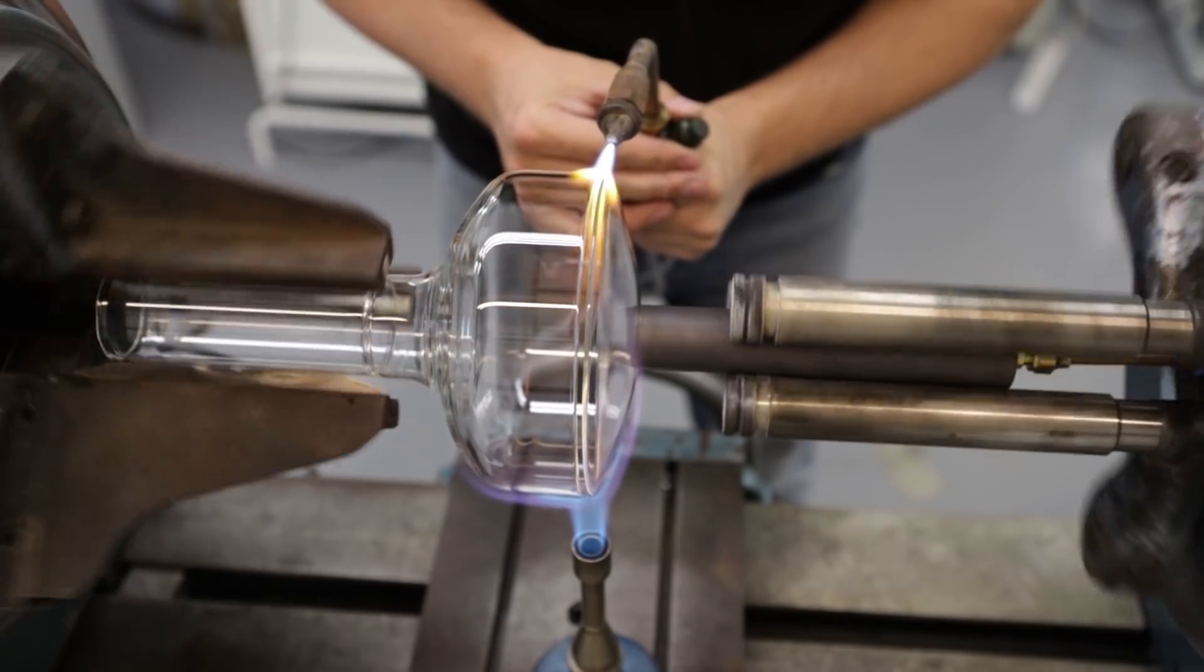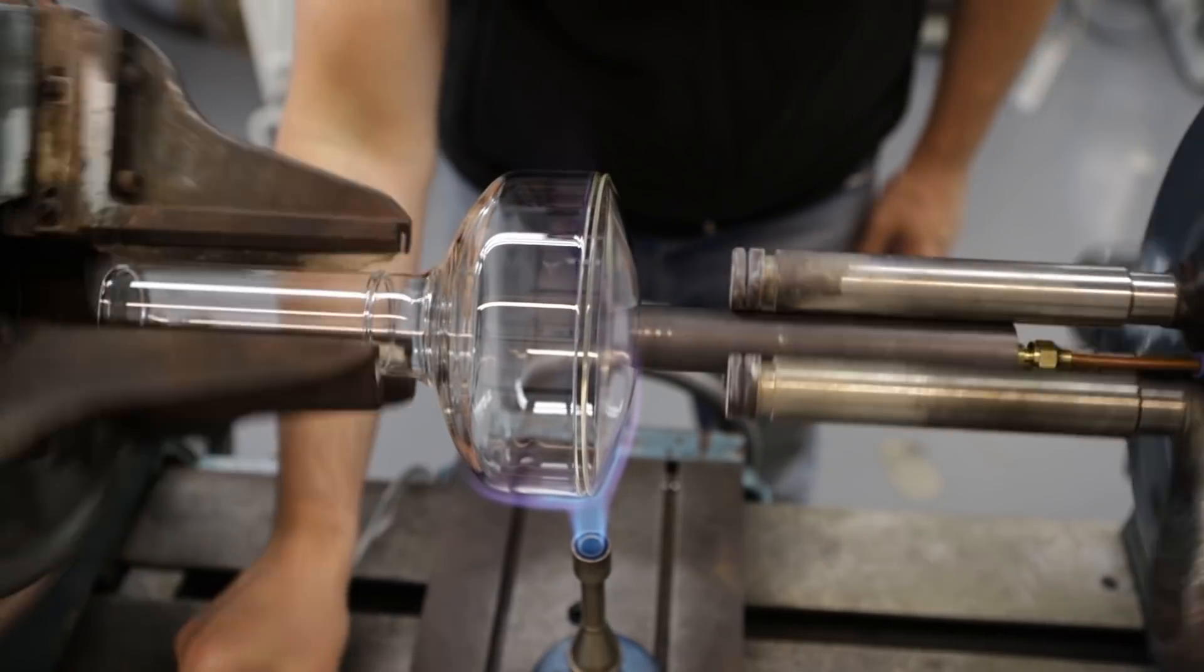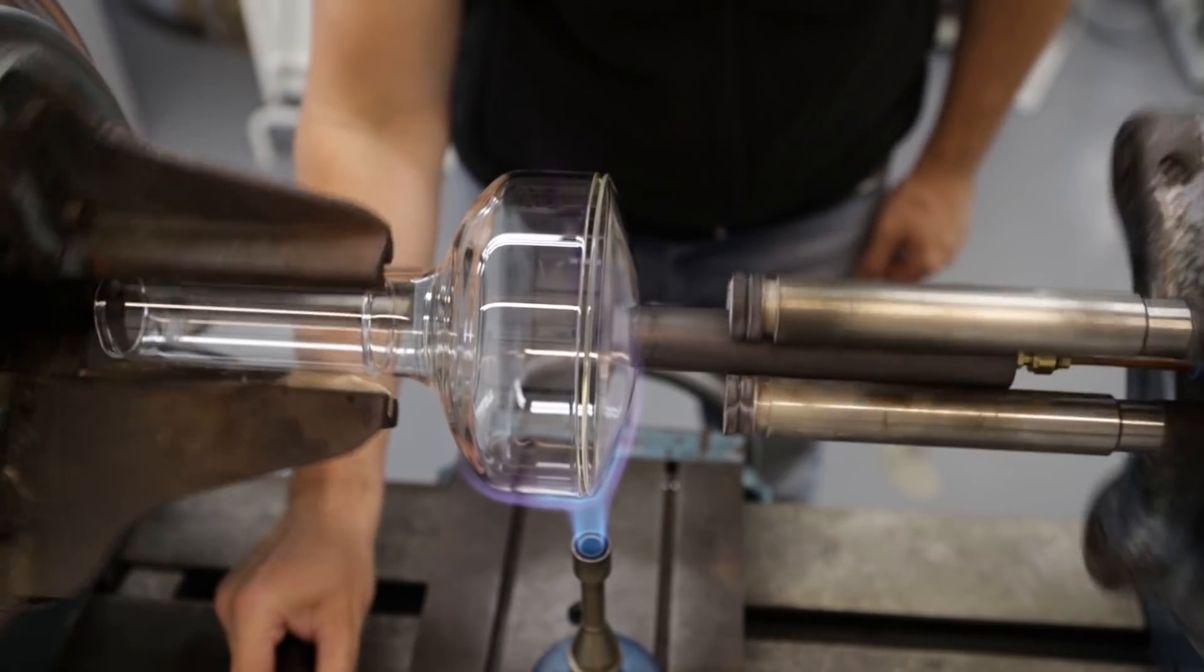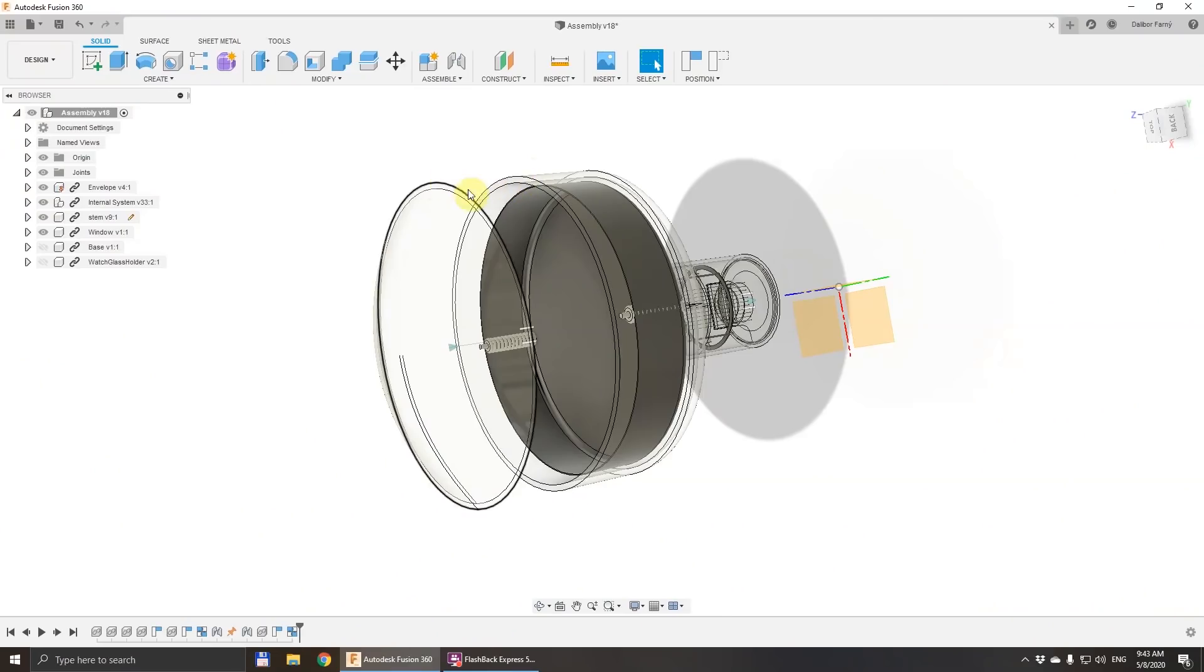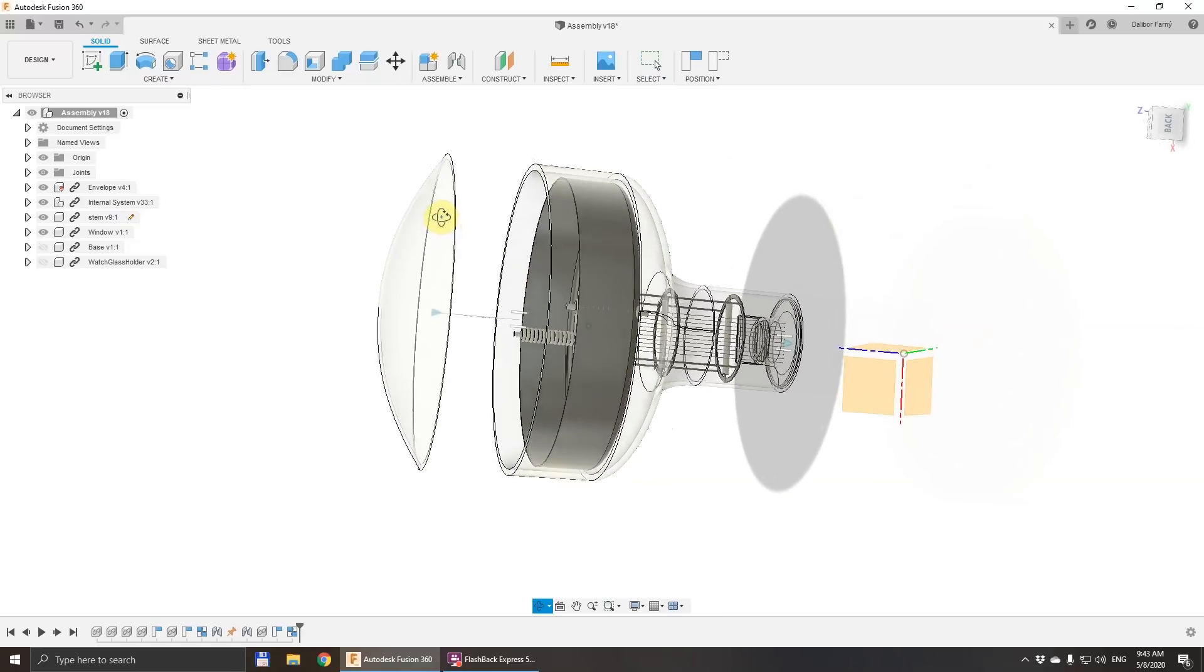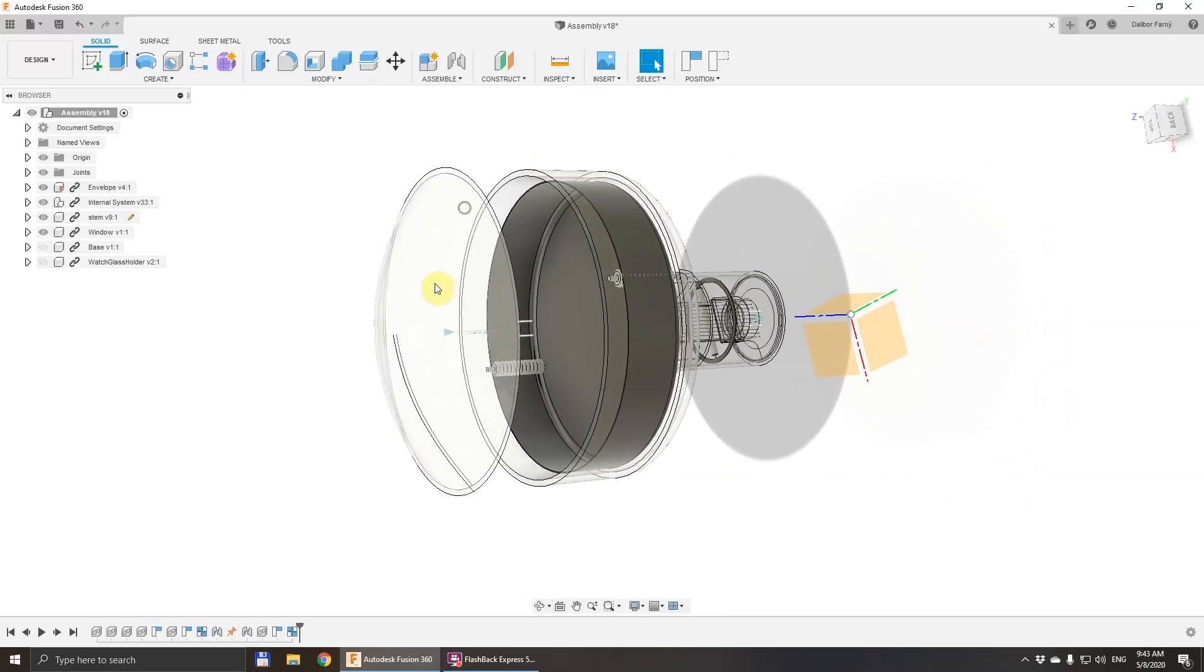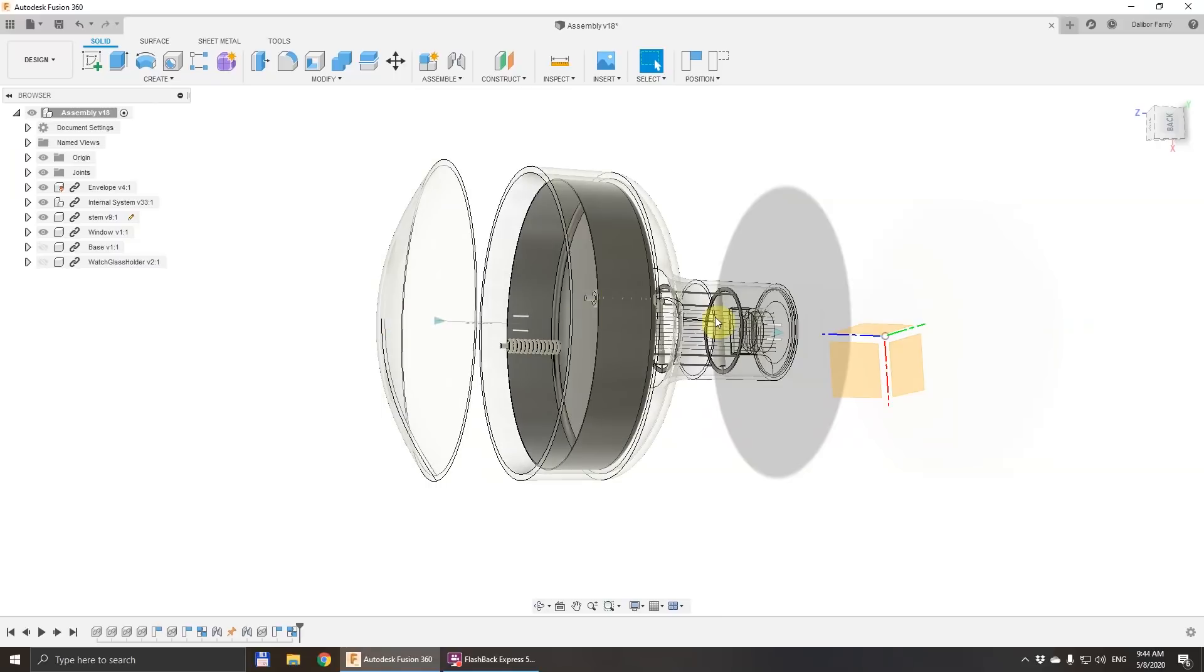The parts will rotate all the time during the sealing because we will need to heat up the edges to be sealed evenly by the burners, and during this operation I need to hold both of them.